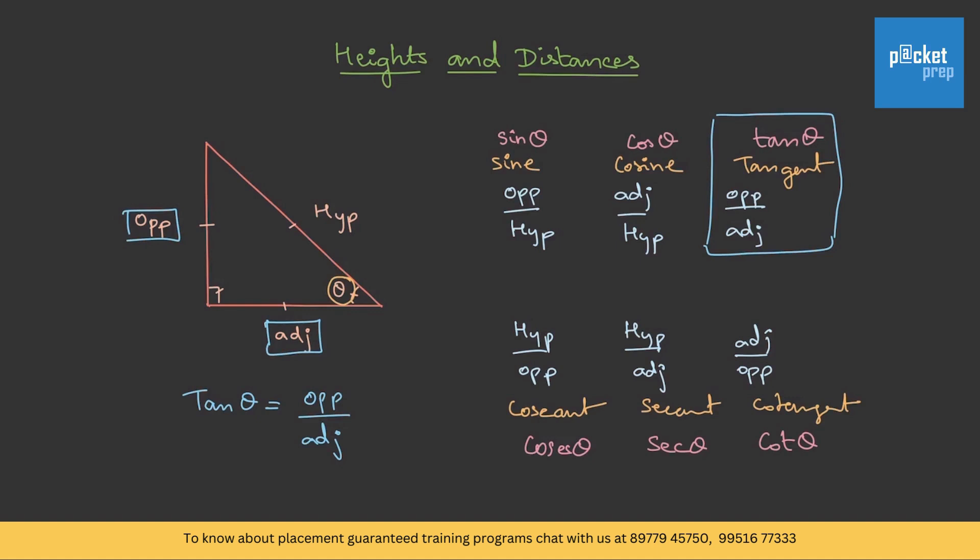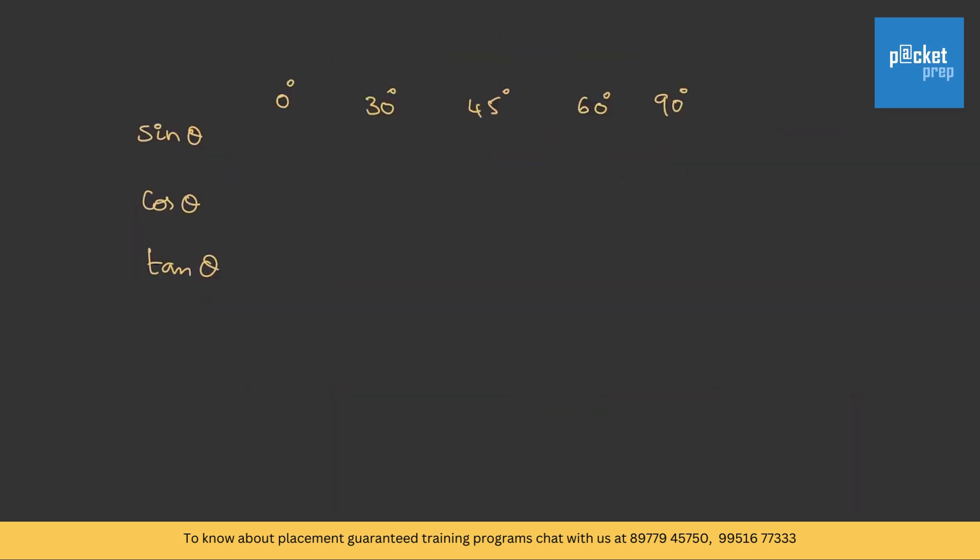Apart from these basics, you should also memorize a couple of values of these trigonometric ratios. Let me write them for you. Sin theta, cos theta and tan theta, and the angles are 0, 30, 45, 60 and 90.